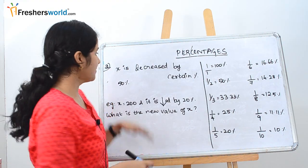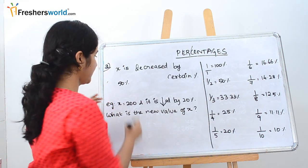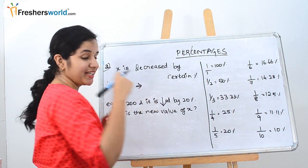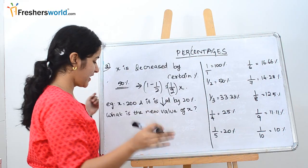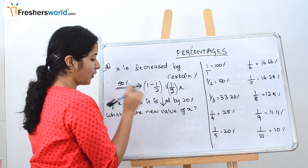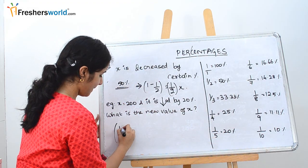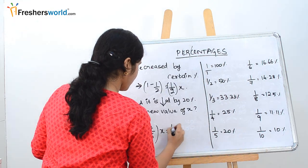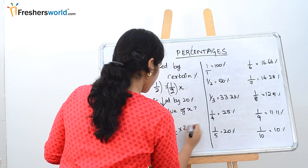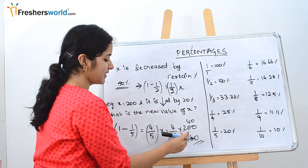The third type is: x is decreased by a certain percentage. Taking the same example: x is decreased by 50%. We know 50% is 1 by 2. In increase we add; here we subtract. So 1 minus 1 by 2 is 1 by 2 of x. With our example: x is 200, decreased by 20%. 20% is 1 by 5, so 1 minus 1 by 5 is 4 by 5 of x. So 4 by 5 into 200 equals 160. If x is decreased by 20%, the new value of x is 160.